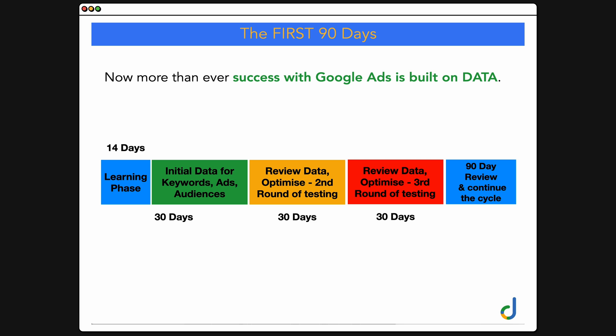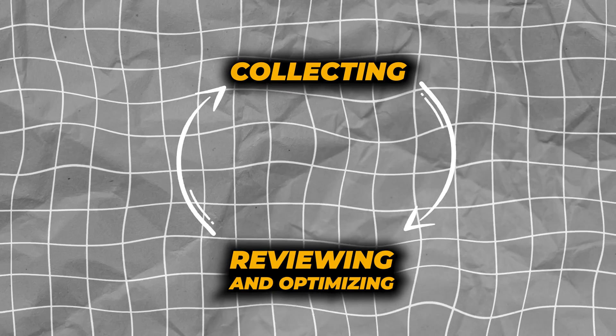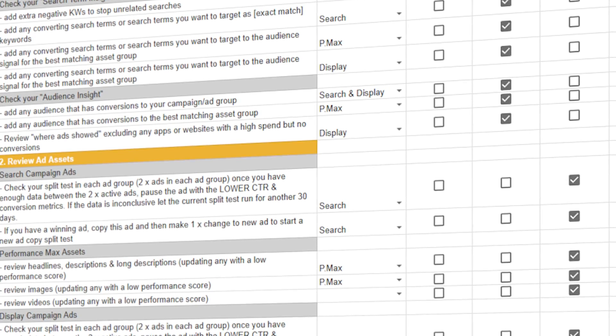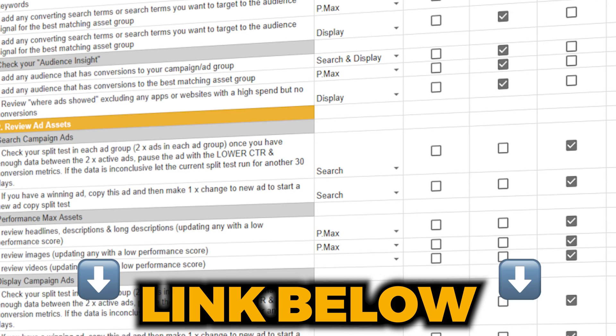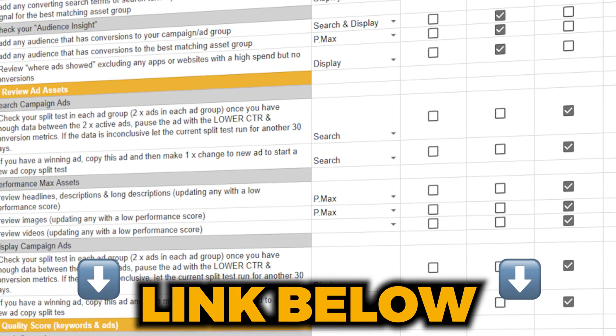Once we've got a campaign past that first three months, we're not going back into a learning phase. But you can see there are constant blocks of reviewing ad copies and other areas every 30 days. So if you're currently not seeing any conversions, don't stress out — especially if your campaigns have only been running for a couple of weeks or even a couple of months. Success with Google Ads is found when you go through different cycles of collecting data, reviewing that data, and making the correct optimization decisions. Follow the link in the description to get access to my Google Ads optimization checklist.